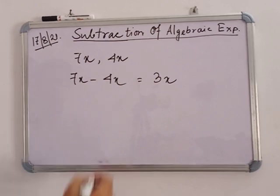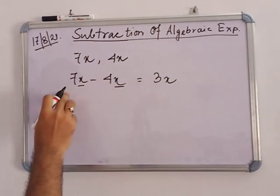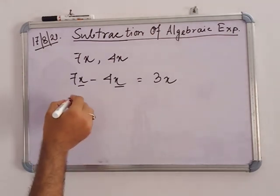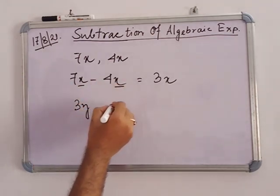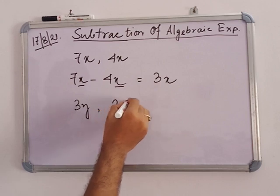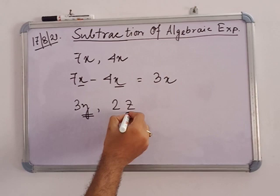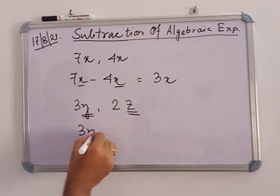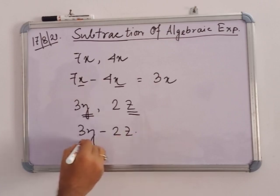Here x is the variable, which is the same. So when we have the same variable, we can subtract. But when the variables are different — suppose 3y and 2z — we cannot subtract, because the variables are not the same. So you have to write only 3y minus 2z.